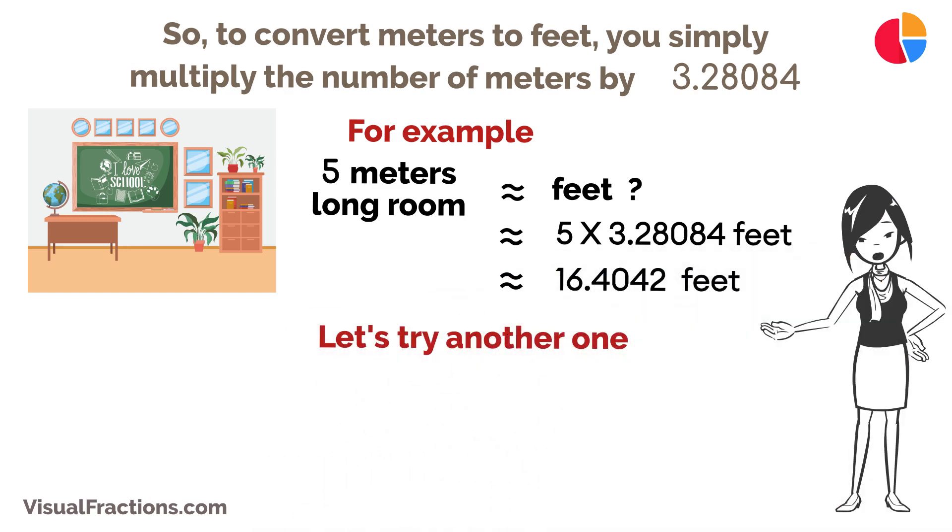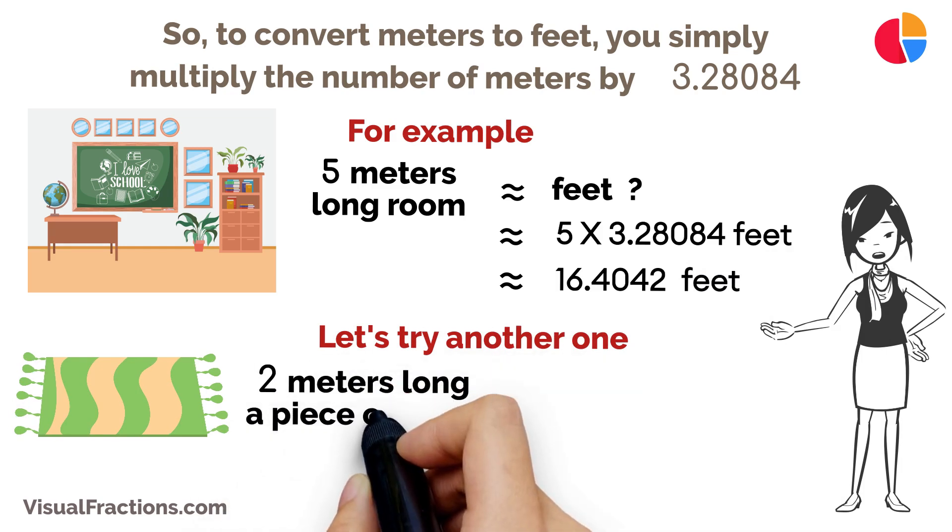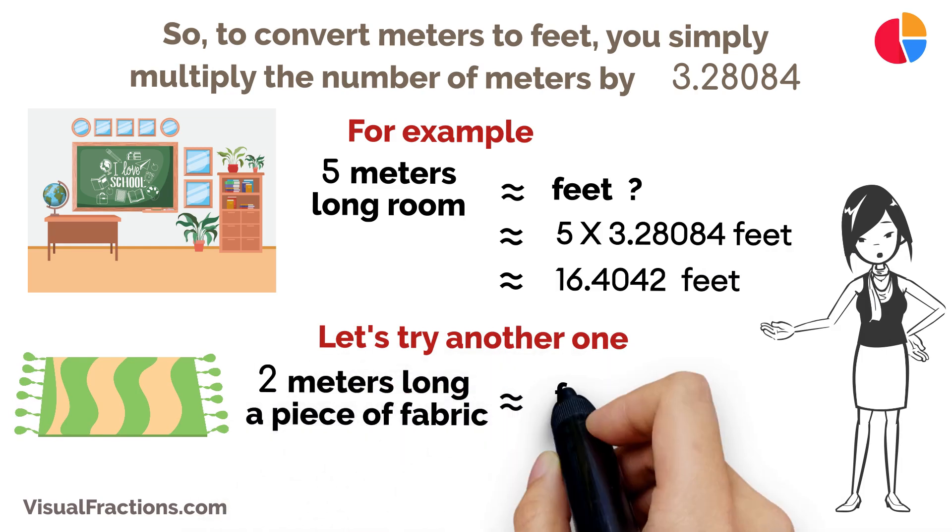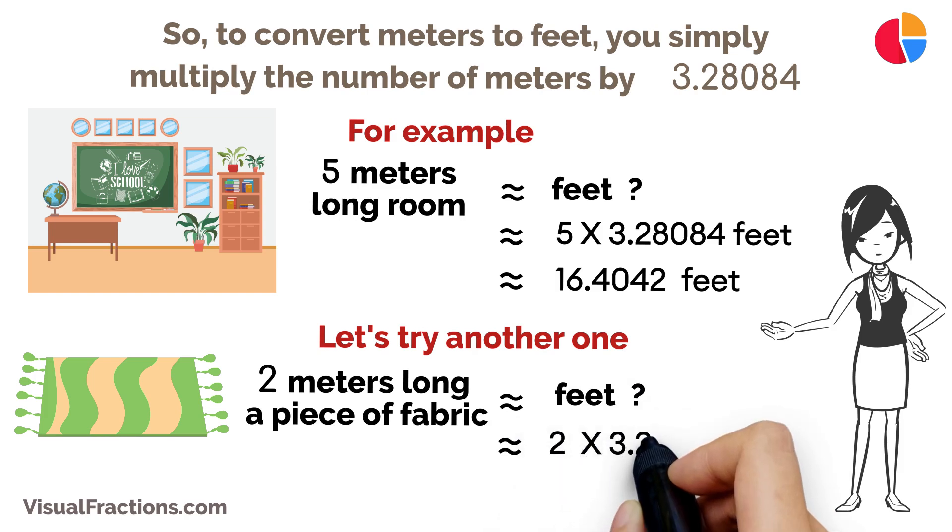Let's try another one. Suppose you have a piece of fabric that is 2 meters long. To convert that to feet, you multiply 2 meters by 3.28084, which will give you approximately 6.56168 feet.